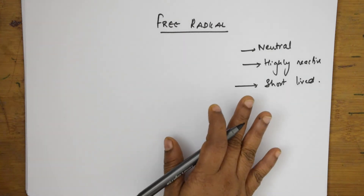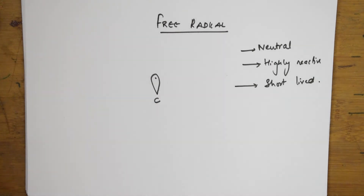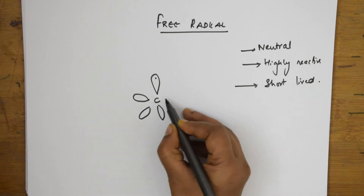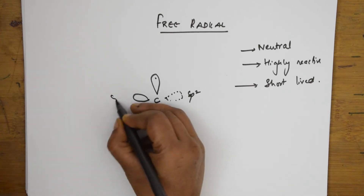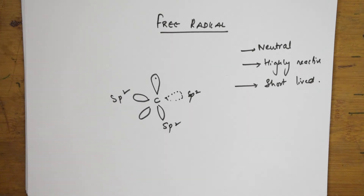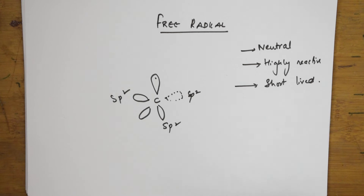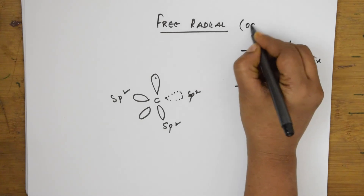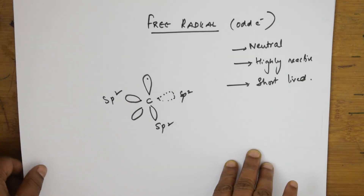When drawing the free radical structure, carbon is in the center denoted by a dot. The remaining orbitals are SP2 hybridized. Atoms with free radicals have an odd electron, which is denoted by a single dot. The shape, bond angle, and everything follow from what has been explained.